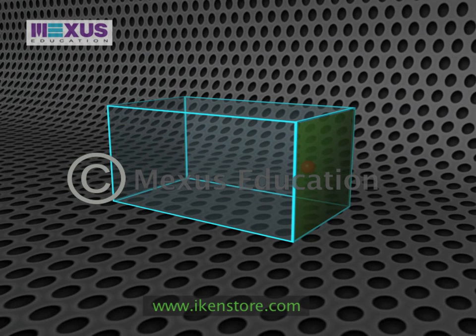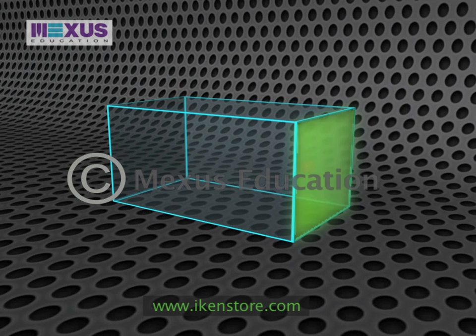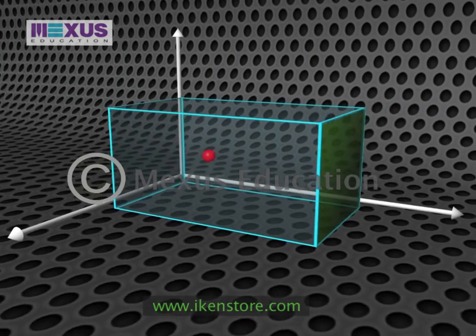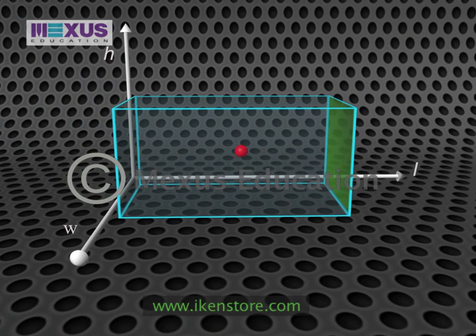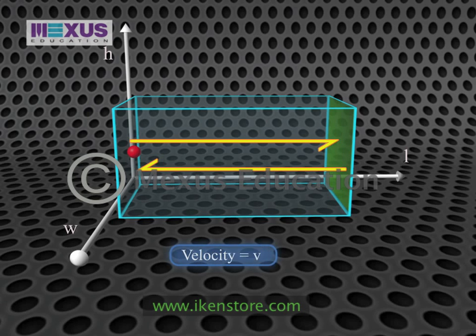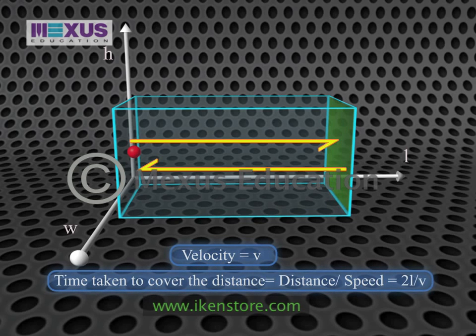The next step is to calculate the force on the shaded green face. To do that, we need to know the dimensions of the box, so we give it length L, width W, and height H. The molecule will rebound from one end of the box to the other and then back again. In this time, it covers a distance of 2L. Since it has a velocity V, the time taken — that is, distance divided by speed — is 2L divided by V.